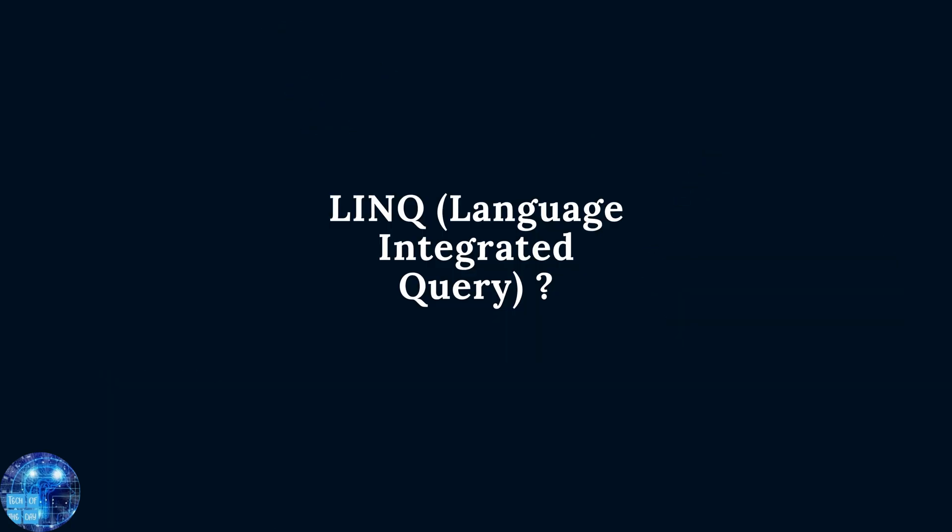But before we start, what is LINQ? LINQ, or Language Integrated Query, is a powerful feature in C# that provides a convenient way to query data from various sources. When combined with Entity Framework Core, it becomes a key tool for interacting with databases. However, optimizing LINQ is crucial for achieving peak performance in data retrieval and manipulation. In this video, we will explore 10 essential tips to boost performance of LINQ queries using EF Core.